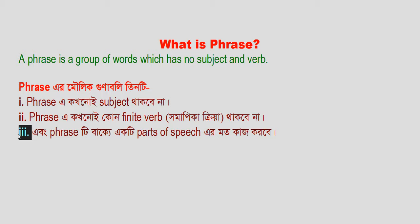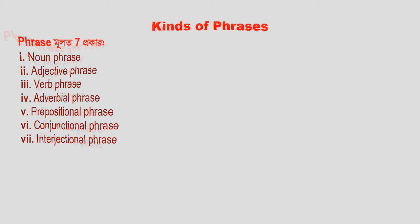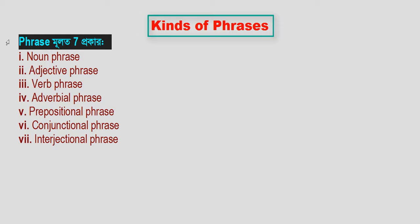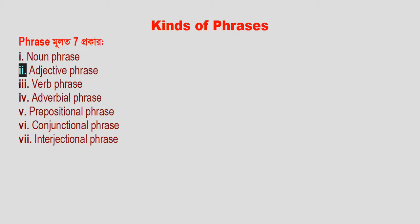Now let's see the kinds of phrases. The kinds of phrases are as follows: 1. Noun phrase, 2. Adjective phrase, 3. Adverb phrase, 4. Adverbial phrase, 5. Prepositional phrase, 6. Conjunctional phrase, and 7. Interjectional phrase.